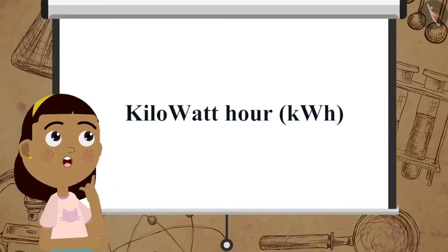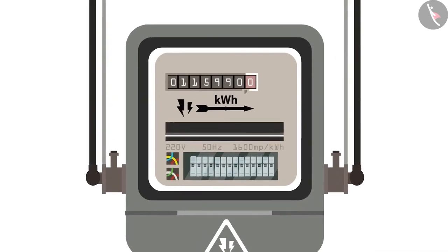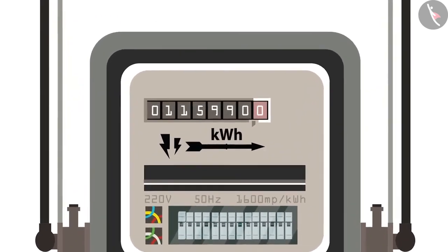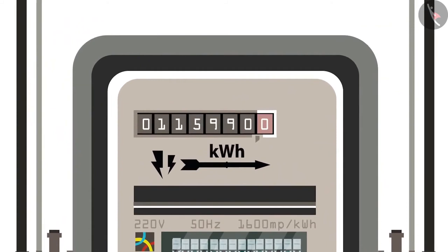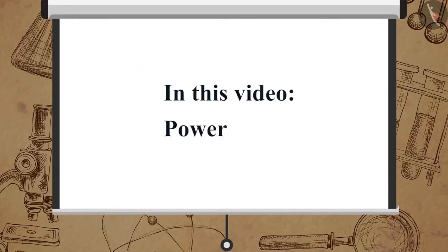Let us take a simple example to understand the usage of the unit Kilowatt hour. Take a look at the electricity meter in your house and observe it closely. Take readings of the meter at 6 am and 6 pm for a few days, and find out how much energy is consumed by your family during the daytime and during the nighttime. In this video we learned about power.